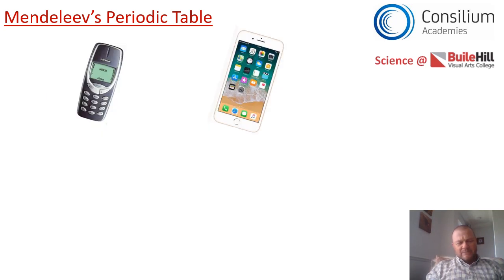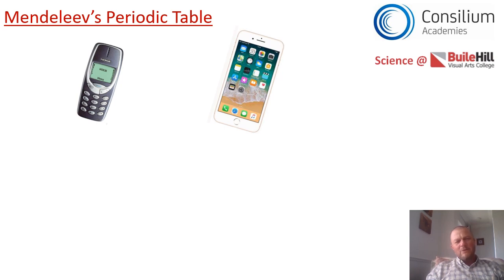If I give you the choice of those two phones, which one would you go for? I'm pretty sure it would be the iPhone on the right-hand side. Your parents probably had to make do with the Nokia on the left when they first got a mobile phone. But if they hadn't had that Nokia, and if scientists and technicians and engineers hadn't built it, they wouldn't have been able to develop the technology we now use in the iPhone. For things to improve, scientists need to learn from one another and develop ideas. And that's exactly what happened with the periodic table.